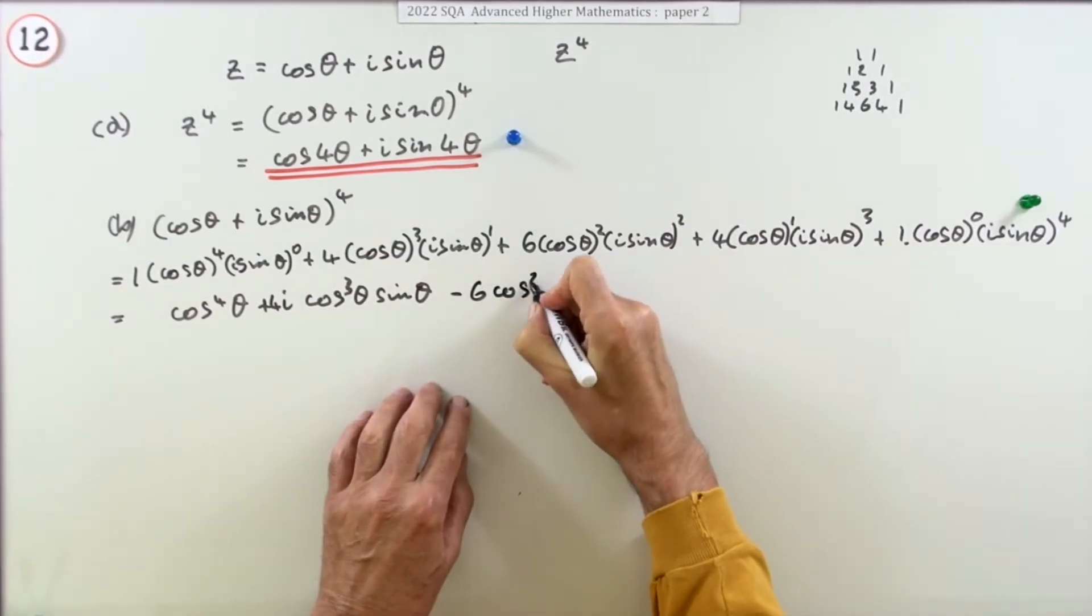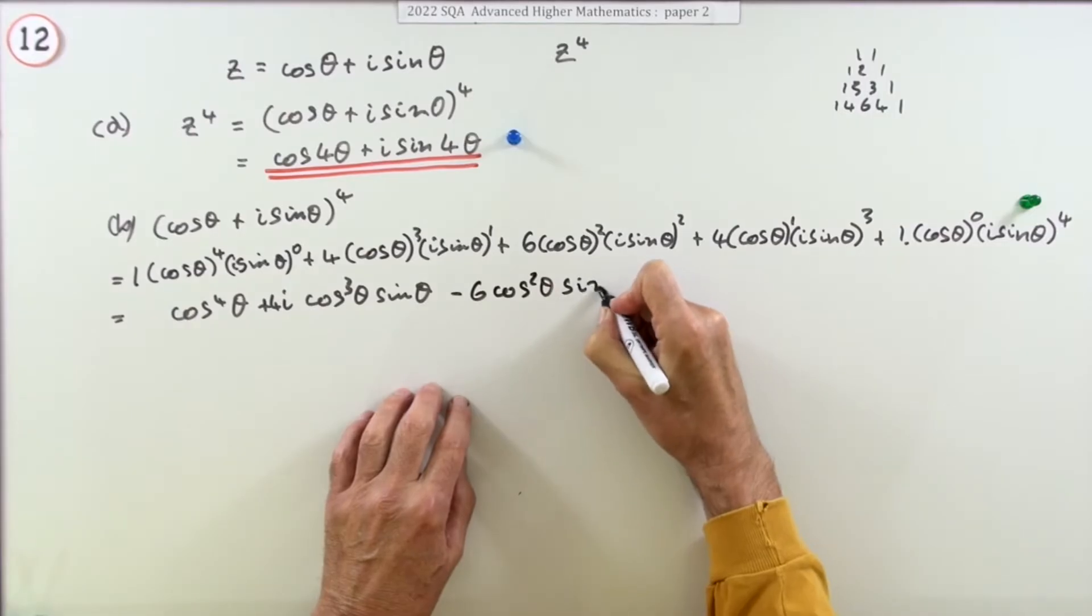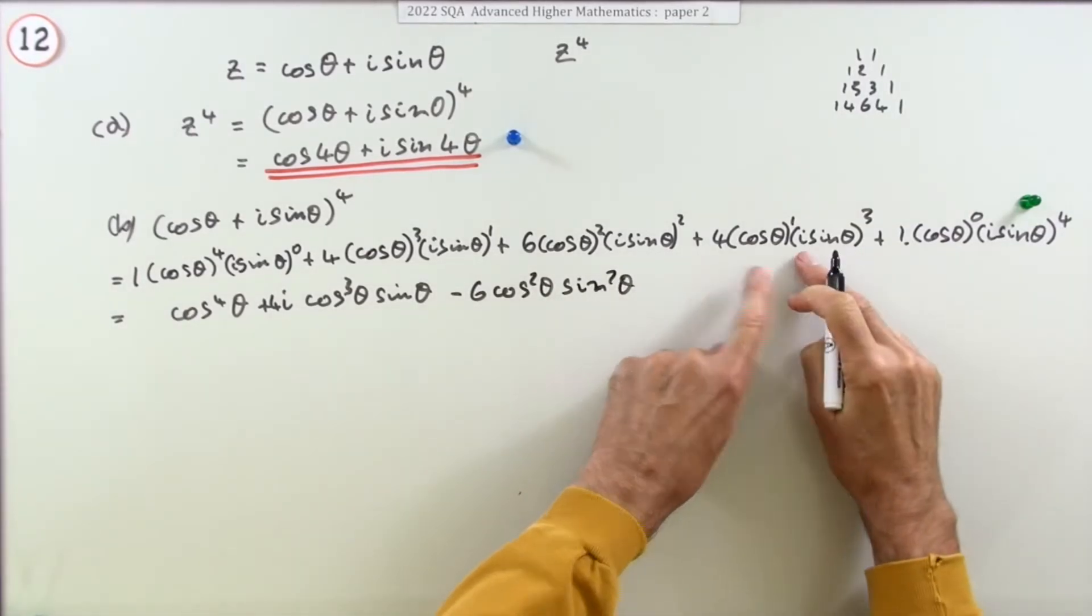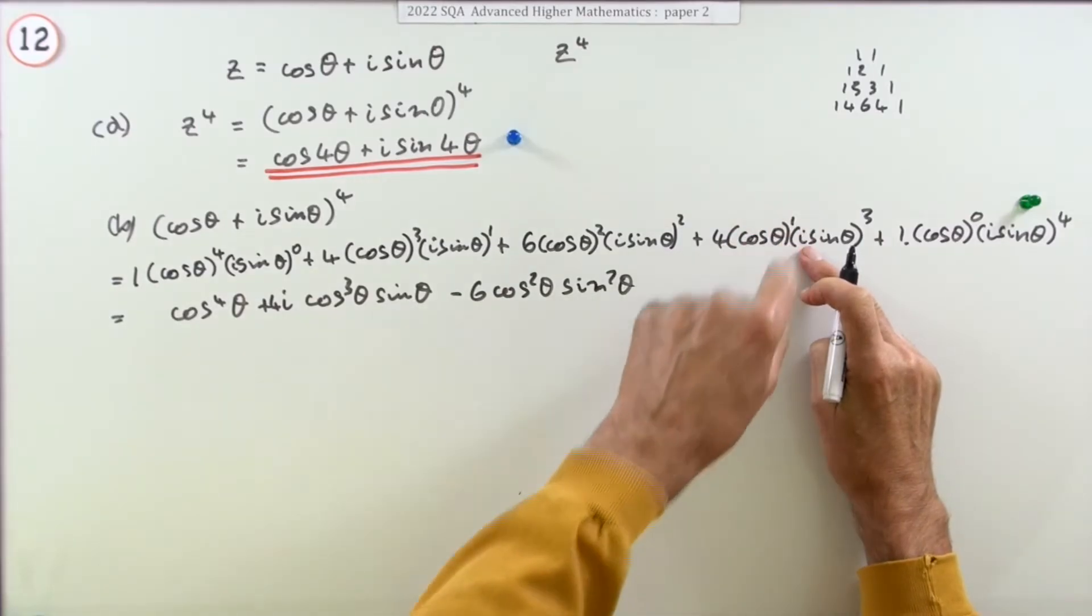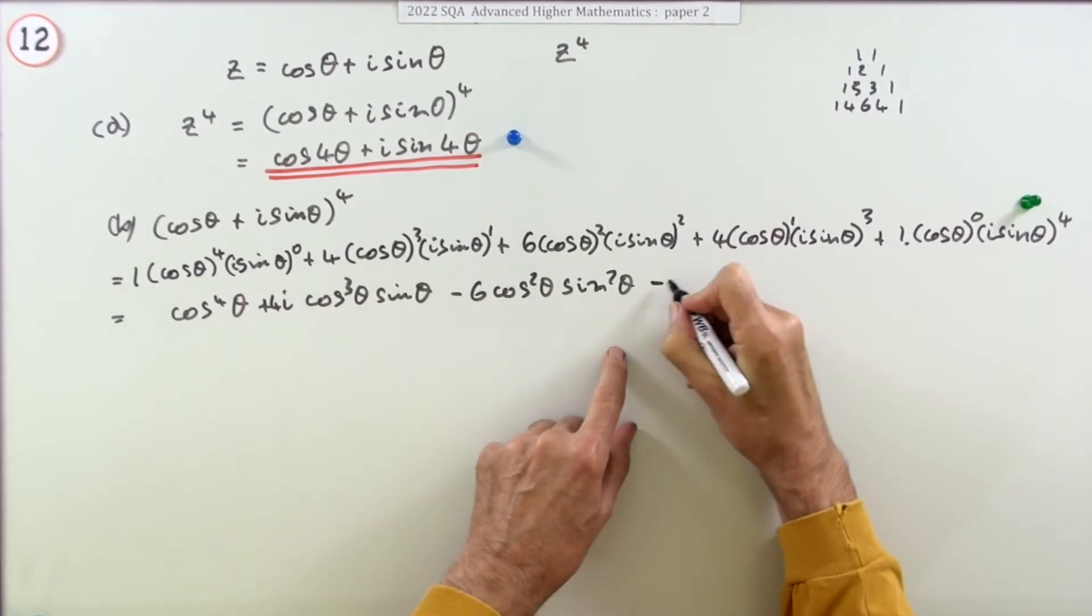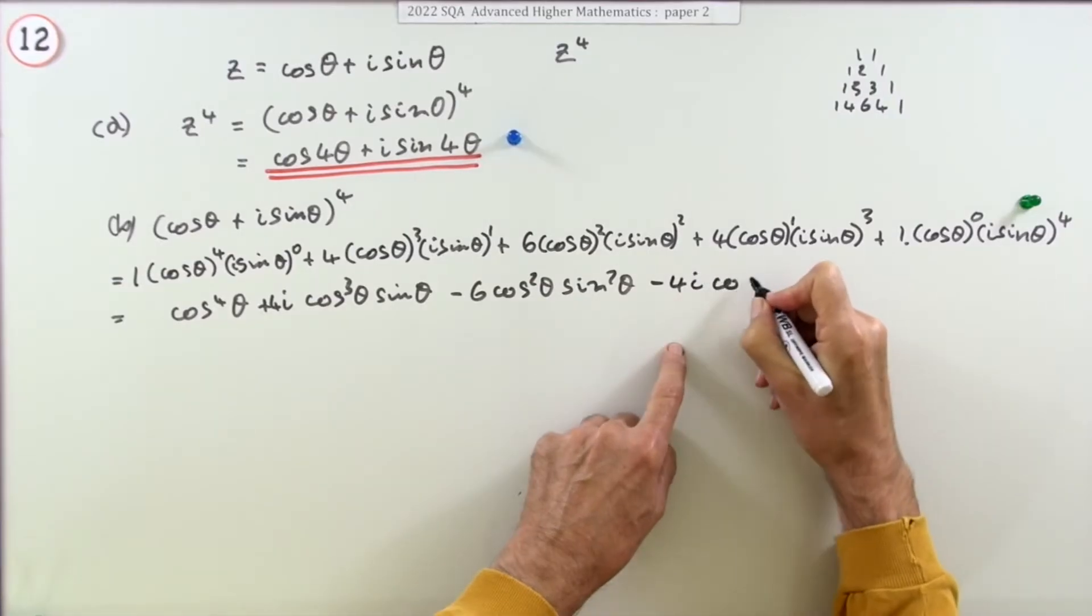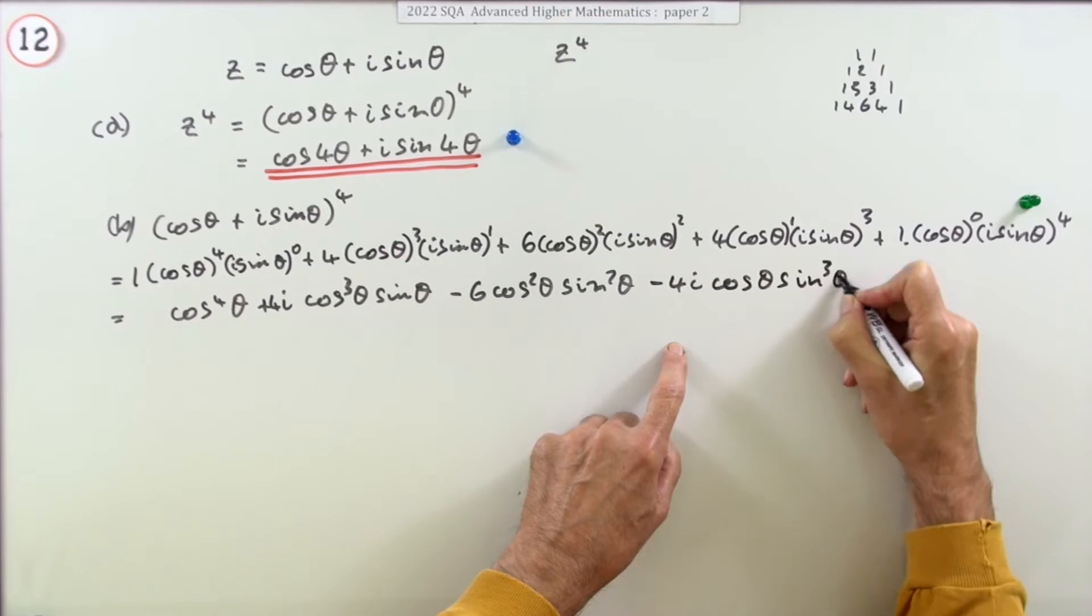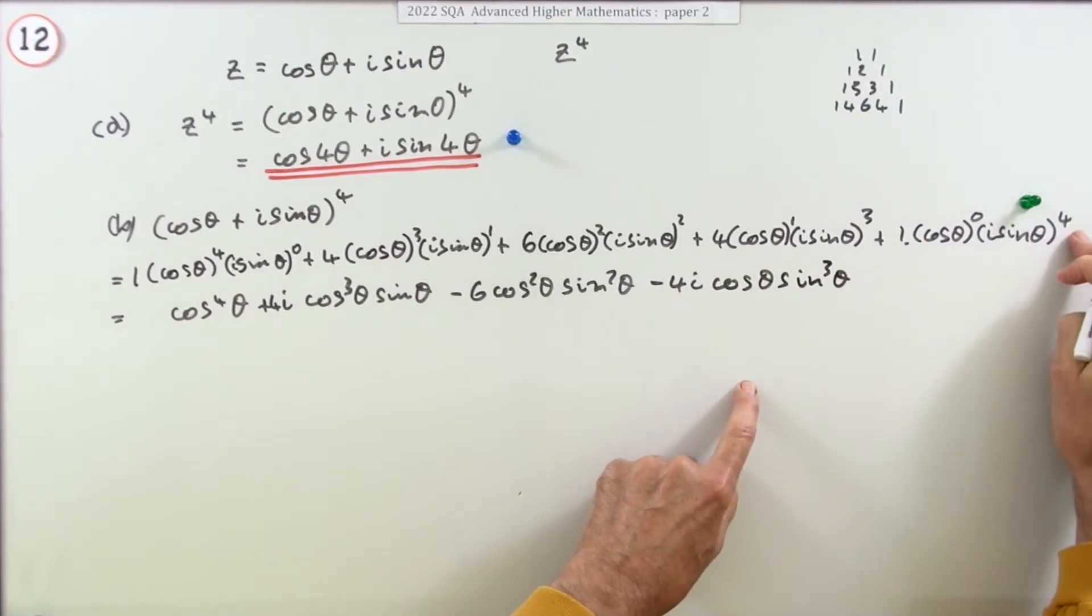Now in the next one you've got i squared so that's negative 1 so this will be minus 6 cos squared theta sine squared theta. The next one, i cubed, well that'll be minus 1 times another i, so that's minus 4i down to just cos theta and still climbing here to sine cubed theta.